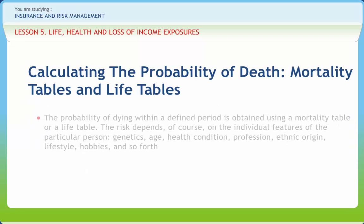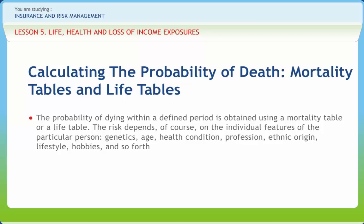The probability of dying within a defined period is obtained using a mortality table or a life table. The risk depends, of course, on the individual features of the particular person: genetics, age, health condition, profession, ethnic origin, lifestyle, hobbies, and so forth. These tables can tell us the probability that a person celebrating their Xth birthday will die before reaching the next birthday at age X plus 1. By common actuarial notation, this probability is denoted by QX.